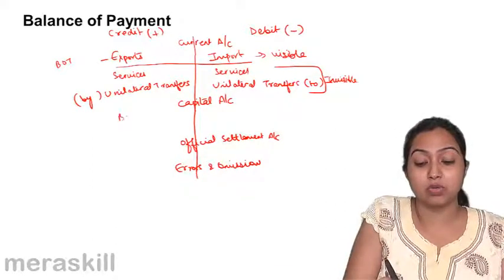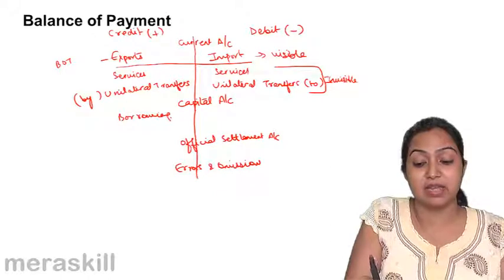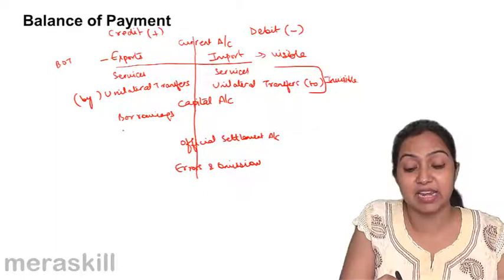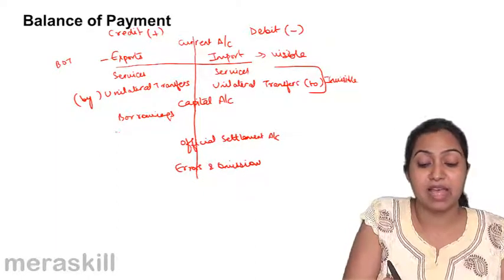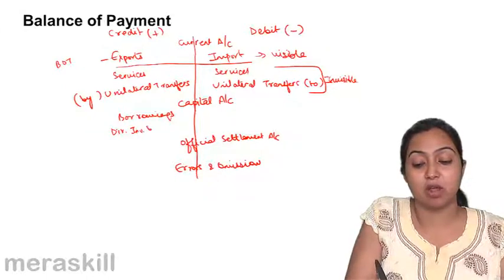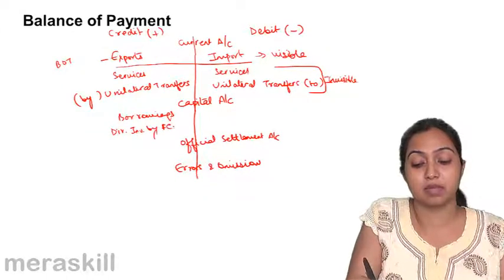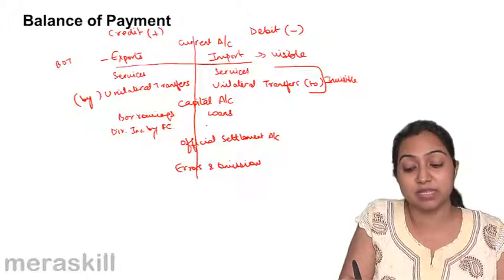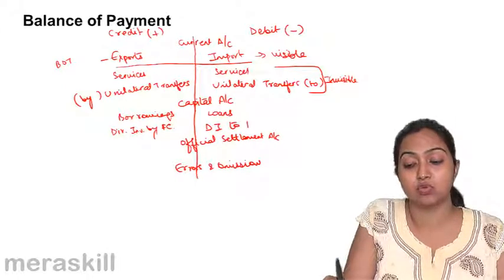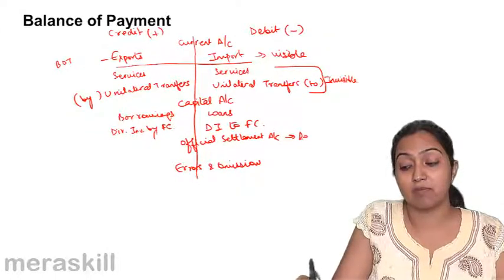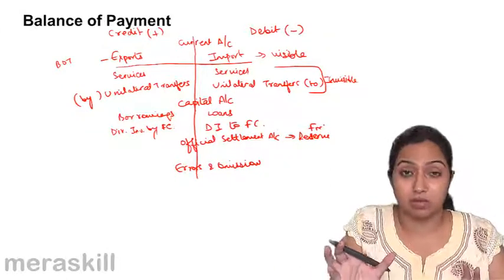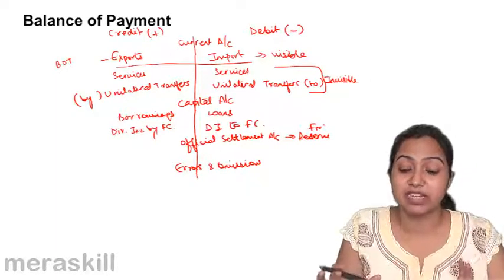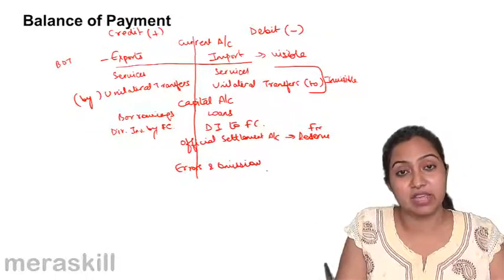When we talk about the capital account, we show the borrowings we make and the direct investments made by foreign countries in our country as income on the credit side. On the debit side, we show the loans we give and the direct investments we make in foreign countries. The official settlement account tracks our foreign reserves — as all this foreign trading takes place, we receive and give foreign income, and that is maintained here. Any remaining errors are handled in the errors and omissions section.